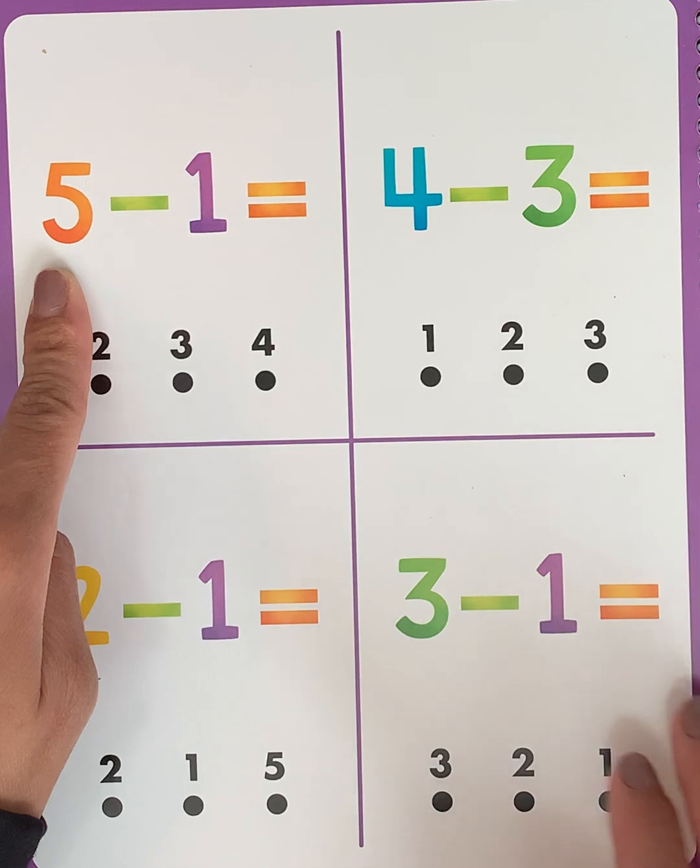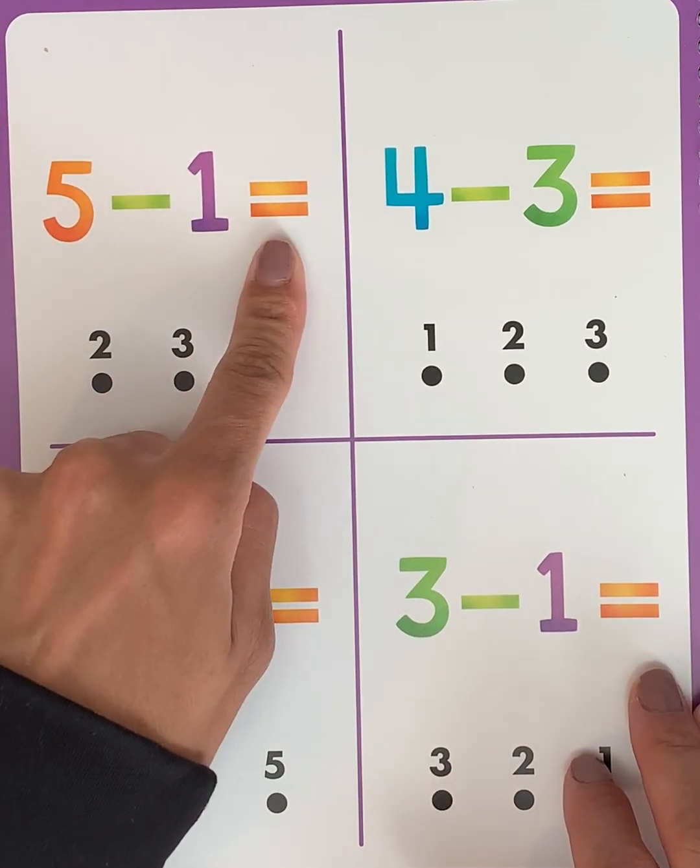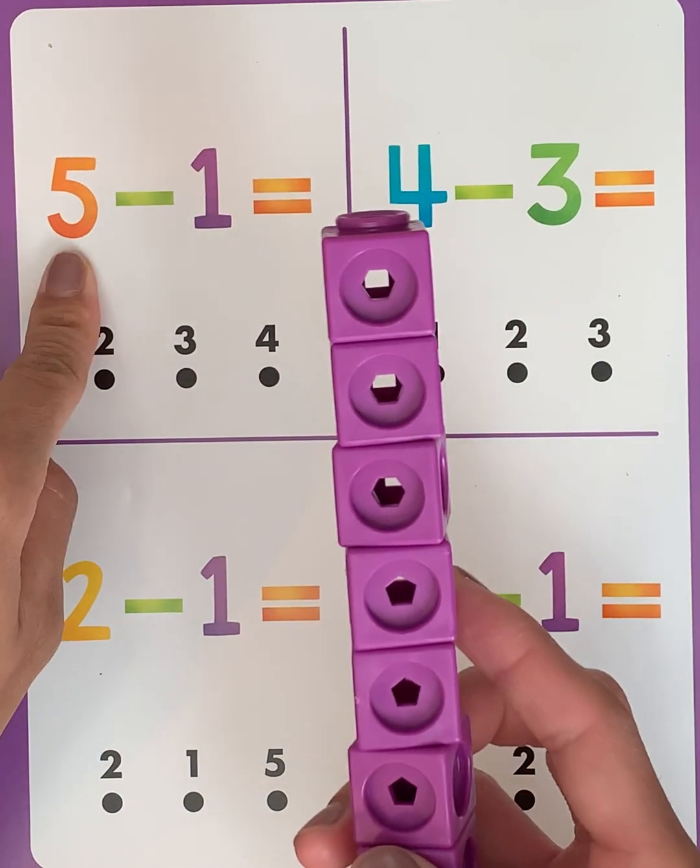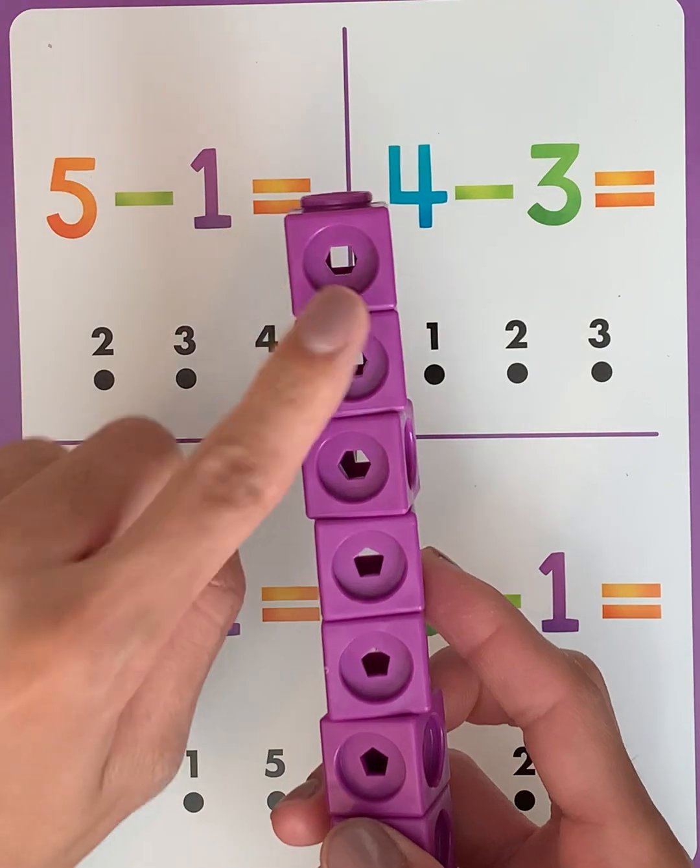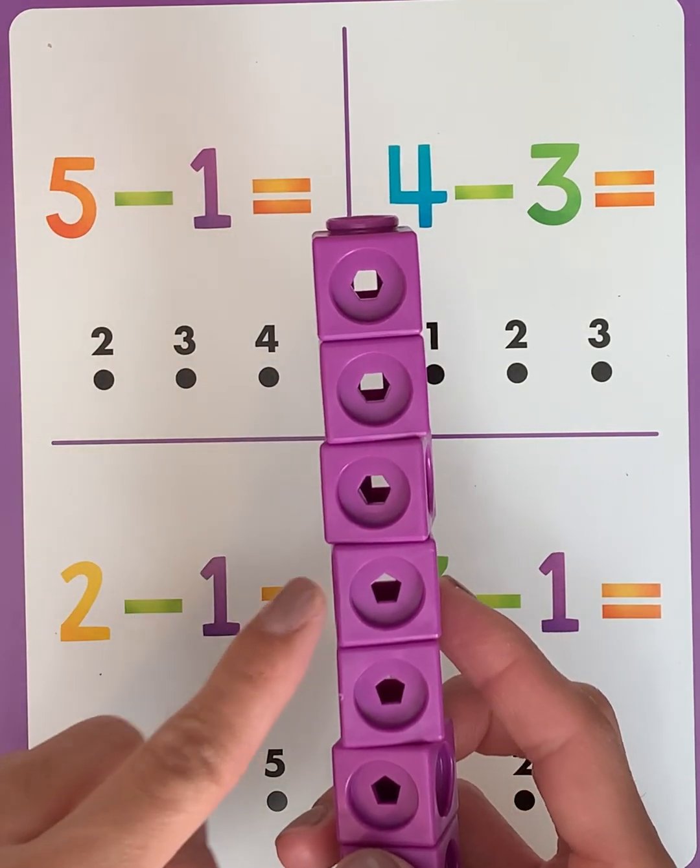Our first problem is 5 minus 1 and we want to see what it equals. So we'll start with purple. We'll start with 5 purple cubes: 1, 2, 3, 4, 5.